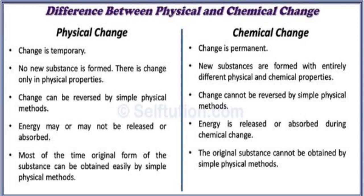On the basis of the previous videos and the description about physical and chemical changes, let us now discuss the basic differences between them. Physical change is temporary because no new substance is formed and there is only a change in physical properties, whereas chemical change is permanent because new substances are formed, and the products formed have entirely different physical and chemical properties.